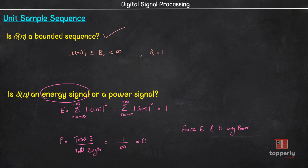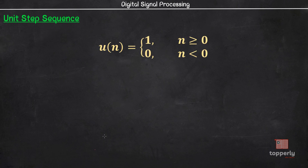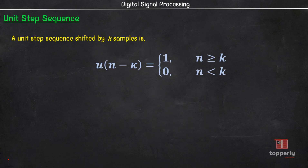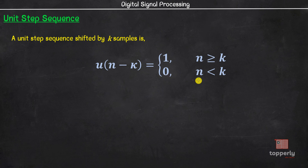The next basic sequence is the unit step sequence. It is denoted by u(n) and is defined as u(n) = 1 when n ≥ 0, and u(n) = 0 when n < 0. Here is how it is graphically represented. Just like before, a unit step sequence shifted by k samples is given by u(n-k) = 1 for n ≥ k, and = 0 for n < k.